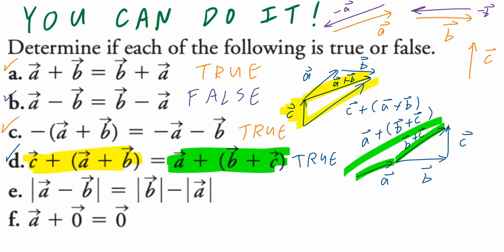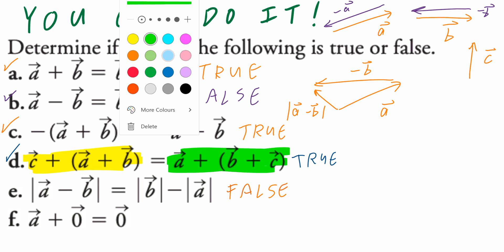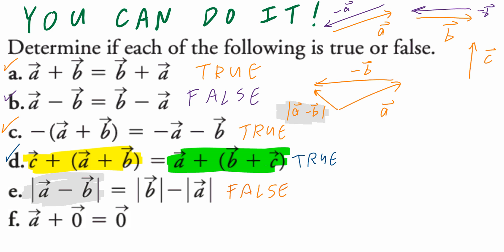Part E: the magnitude of vector A minus vector B equals the magnitude of B minus the magnitude of vector A. I think the answer is going to be false. Vector A minus B looks roughly like that, and we're looking at its length — the magnitude of vector A minus vector B. On the right-hand side, this is the magnitude of B minus the magnitude of A. You can tell, even by inspection, that the difference in the magnitudes of B and A will not be the same as the magnitude of vector A minus vector B.